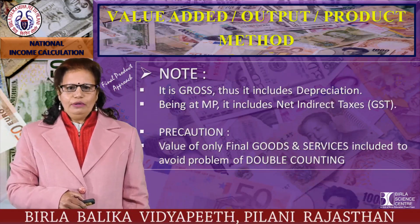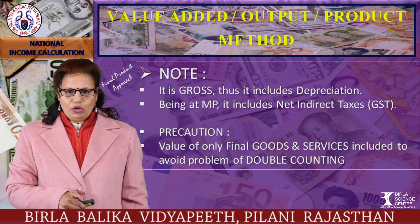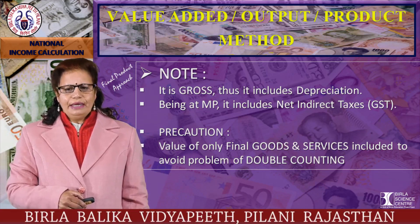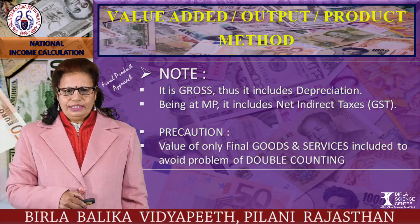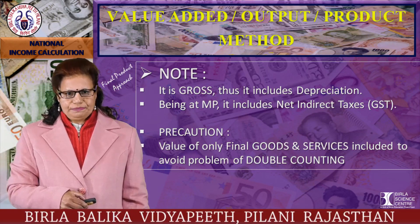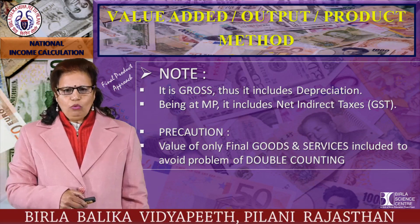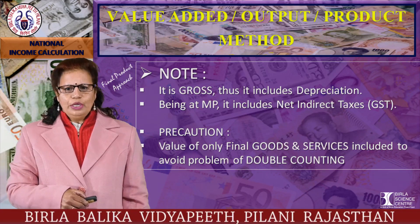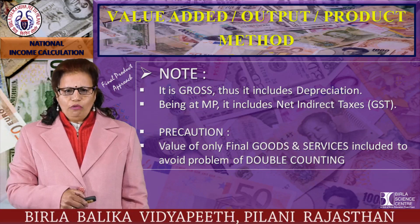Keep in mind that since it is gross, it includes depreciation. Being at market price (MP), it includes net indirect taxes — today called GST, that is goods and services tax. An important precaution: value of only final goods and services is included to avoid the problem of double counting.